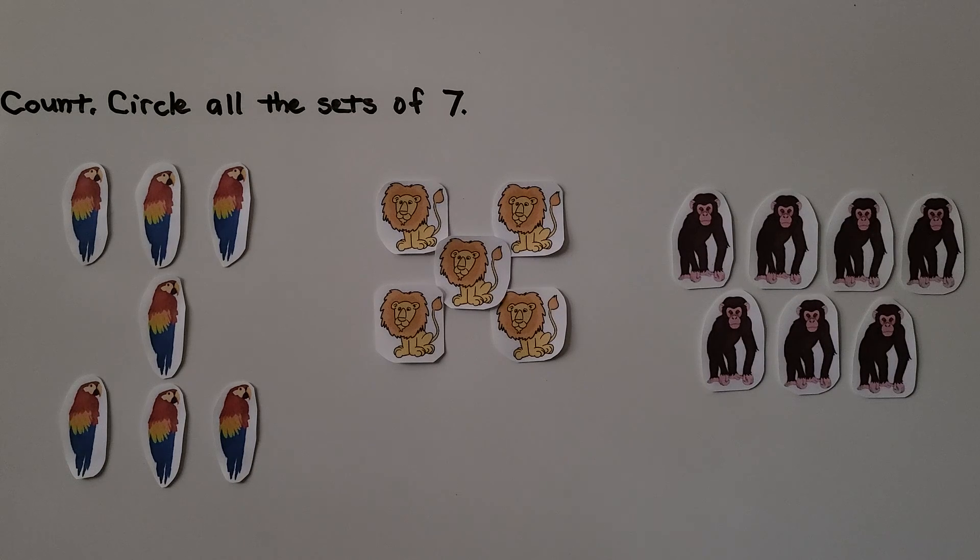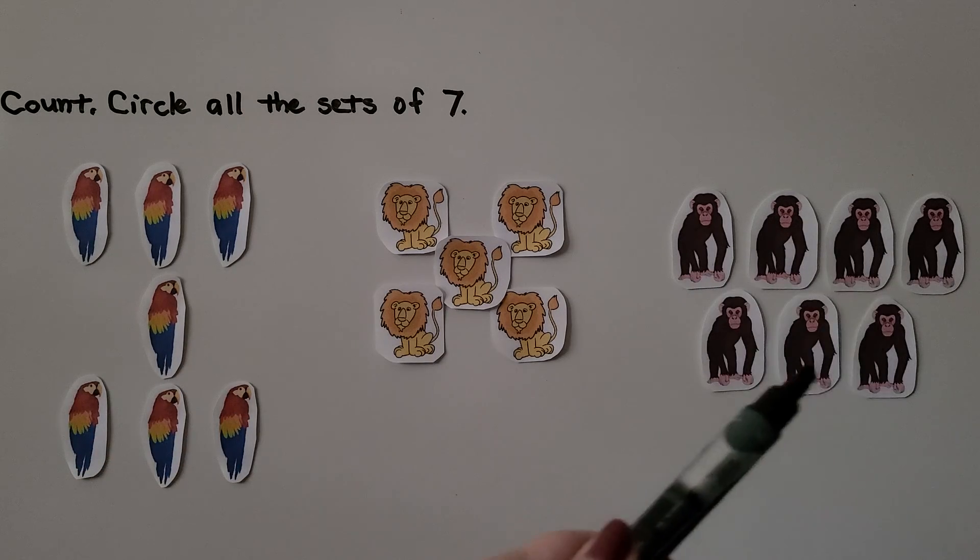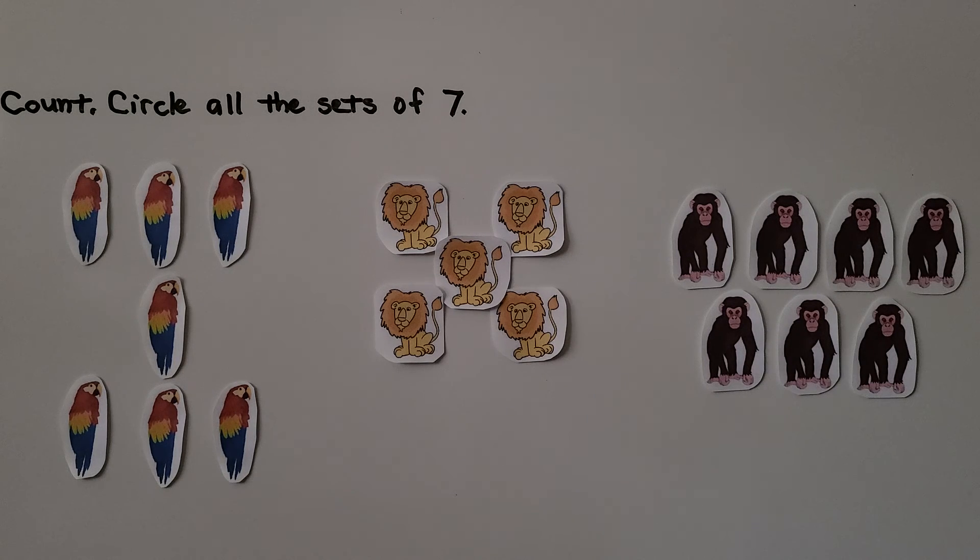Here we've got some pictures of animals. I see a group of parrots. It's a set of parrots. I see a set of lions and I see a set of chimpanzees. We need to count and circle all the sets of 7.